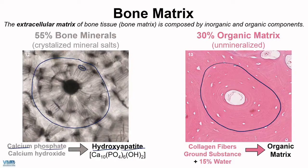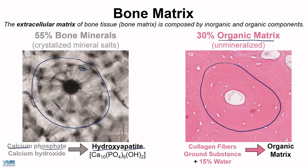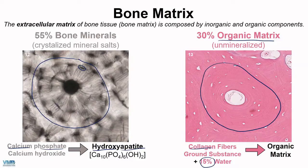In the image on the right, the minerals have been removed, and this leaves the other part of the extracellular matrix — the organic matrix — which is the unmineralized part. This is mostly made up of collagen and gives bone its flexibility. So 30% of bone is this organic matrix, and we have approximately 15% water as well. Together, that gives you the entirety of the bone extracellular matrix, also known as the bone matrix.